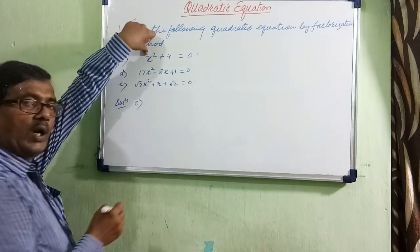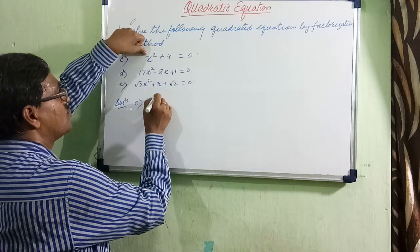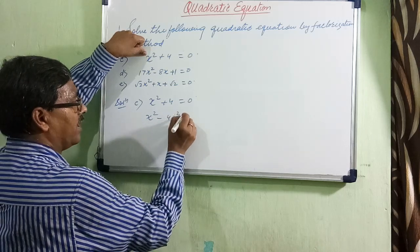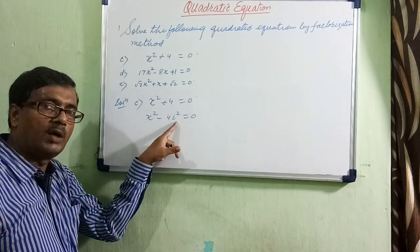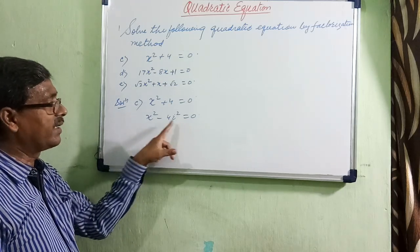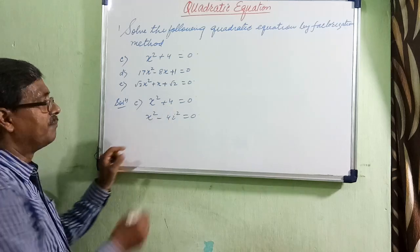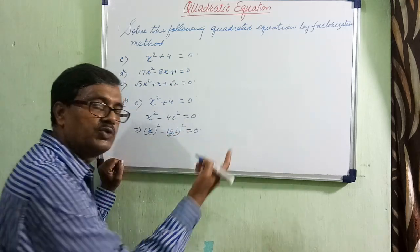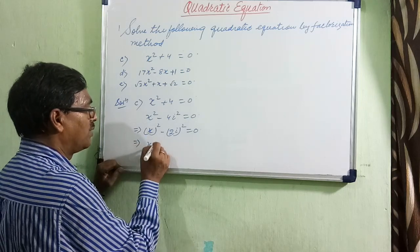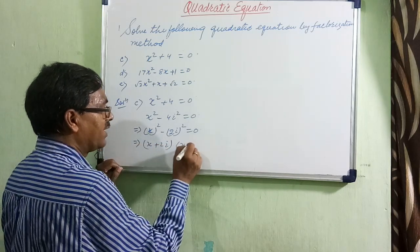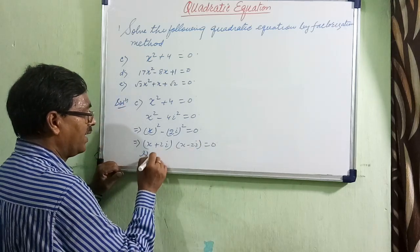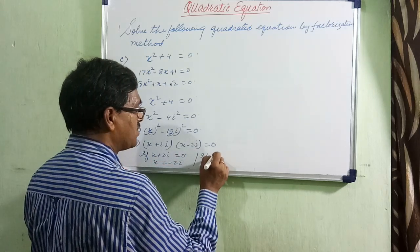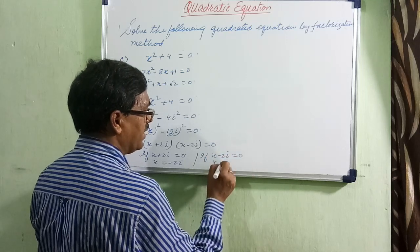Now, there is no i in the next equation, still we can solve it. The equation is x squared plus 4 equals 0. We rewrite it as x squared minus 4i squared equals 0, because i squared equals minus 1, so minus 4 times minus 1 gives plus 4. This becomes x squared minus 2i whole squared equals 0. Applying a squared minus b squared, we get x plus 2i into x minus 2i equals 0, giving x equals minus 2i or x equals 2i.